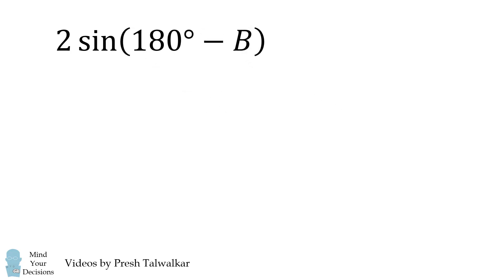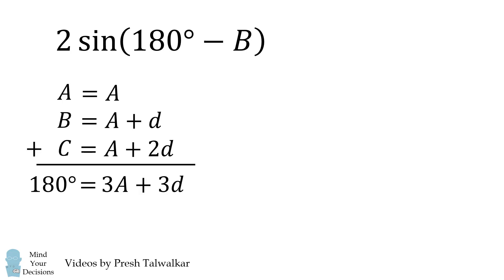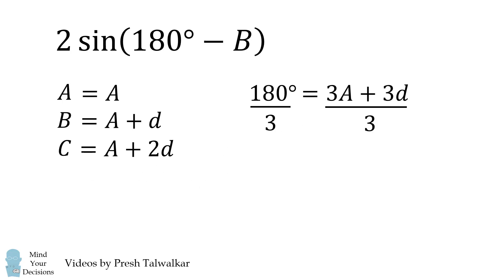We're going to be able to figure out angle B because the angles are in an arithmetic progression. So angle A will be some angle A, B will be A plus D, and then C will equal A plus 2D. We add up the angles, and we get 180 degrees, and on the other side, we get 3A plus 3D. We then divide both sides by 3, and we get that 60 degrees is equal to A plus D.